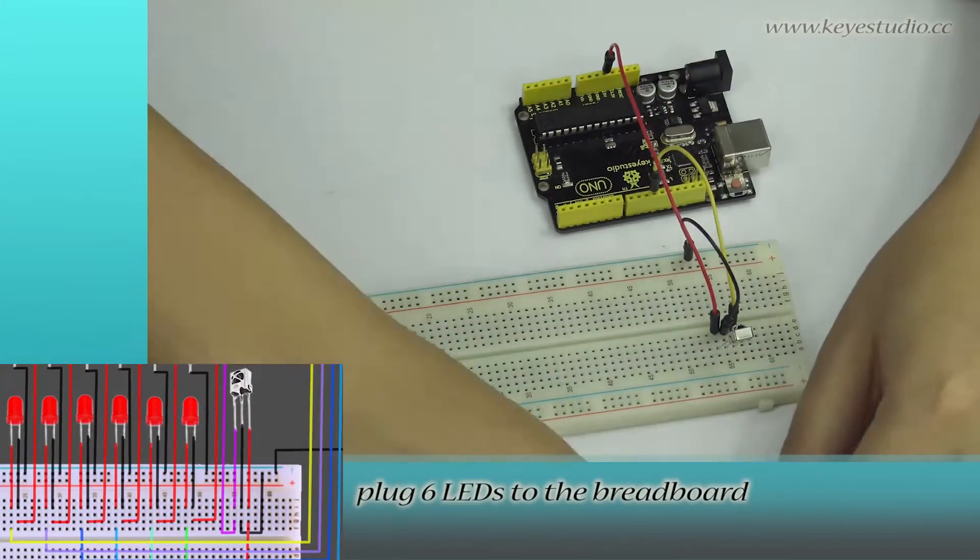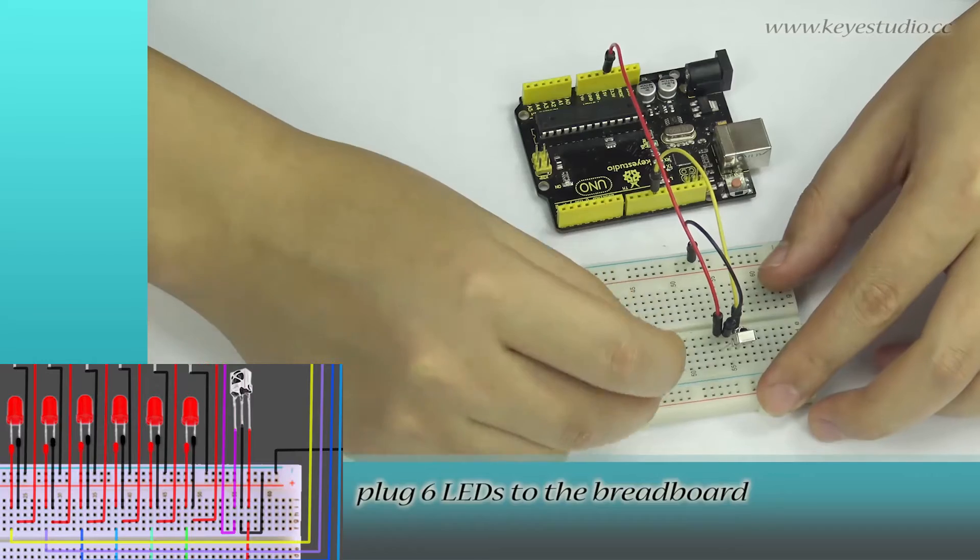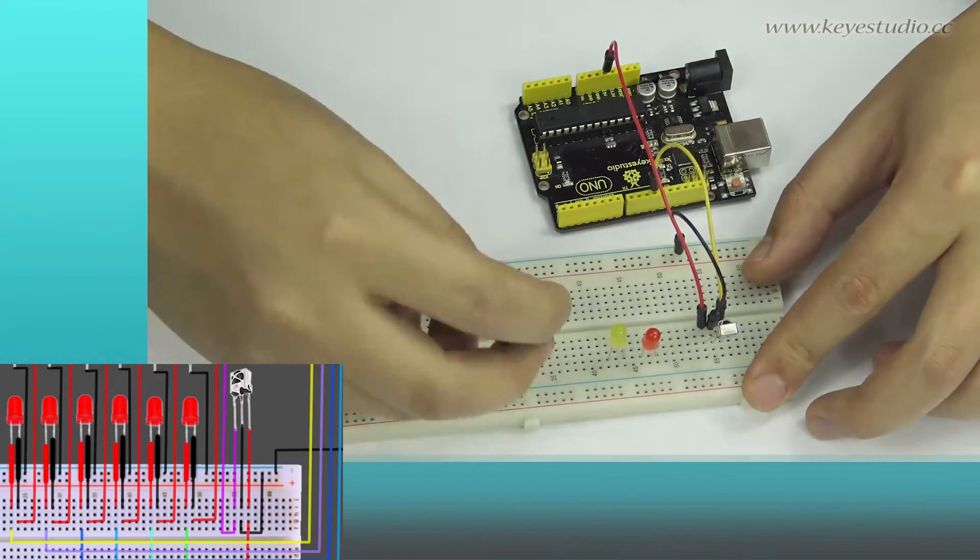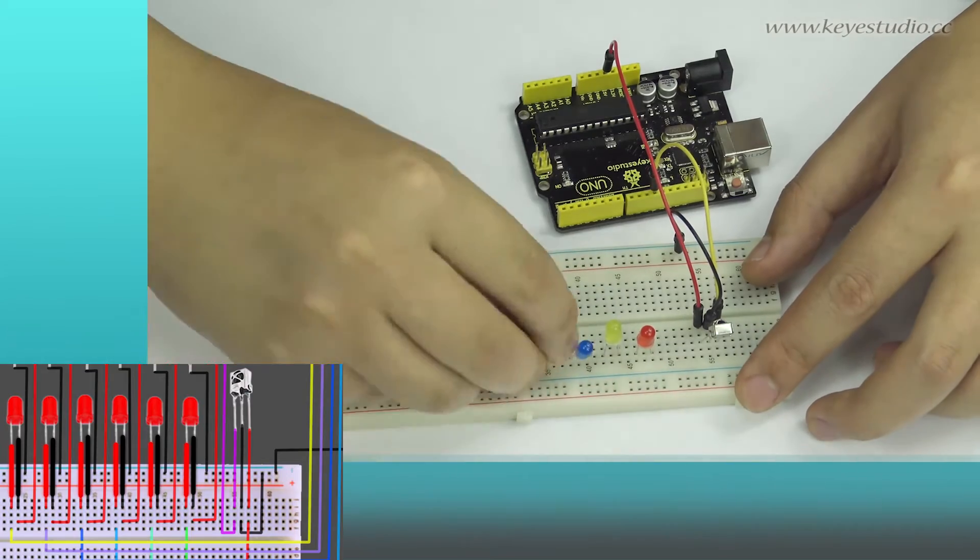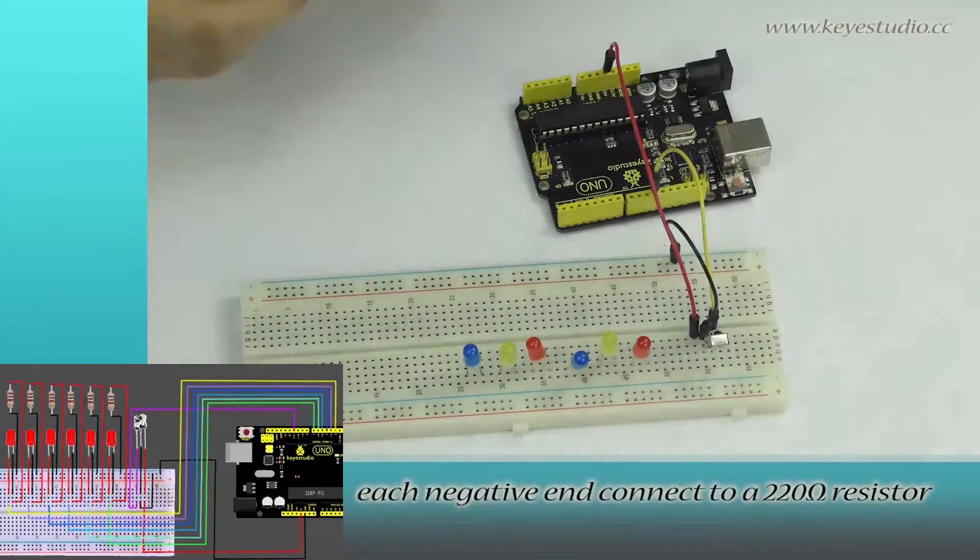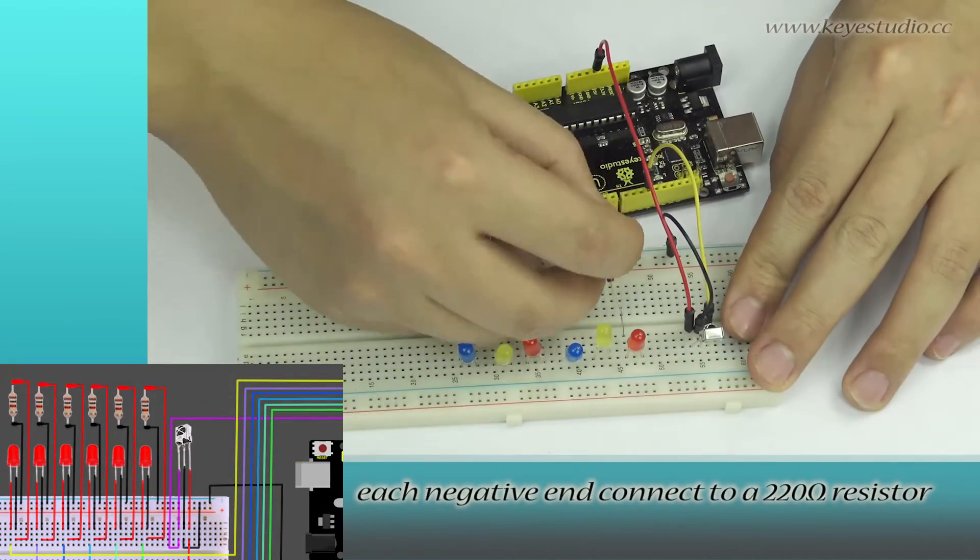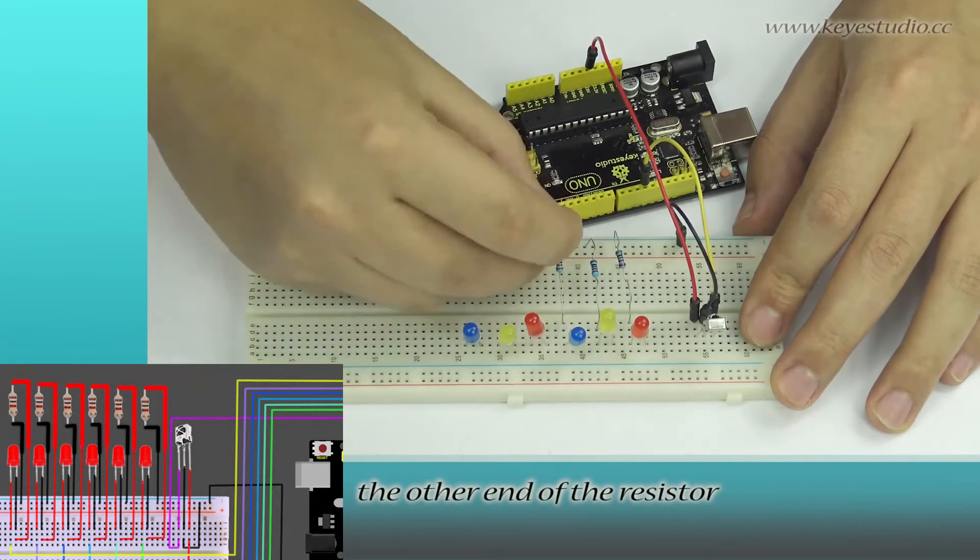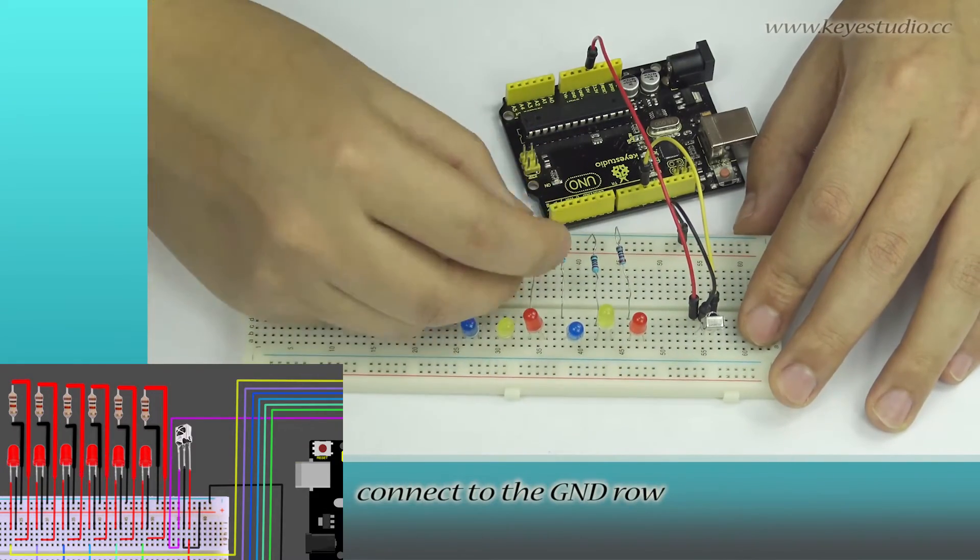Next, plug 6 LEDs to the breadboard. Each negative end connects to a 220 ohm resistor. The other end of the resistor connects to the GND roll.